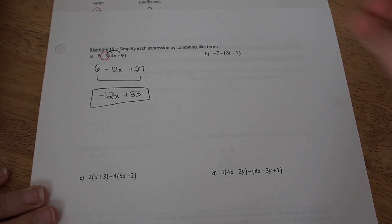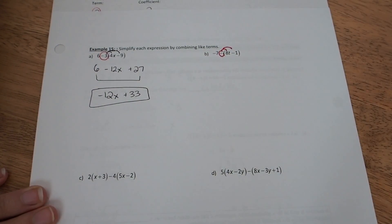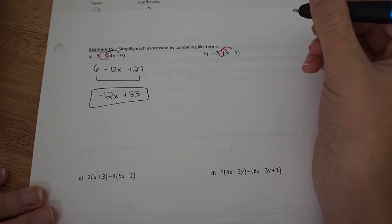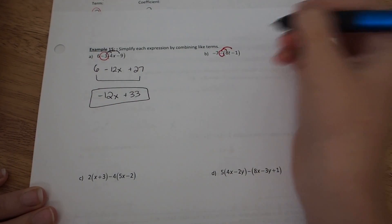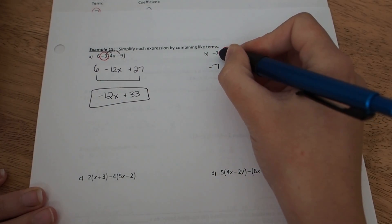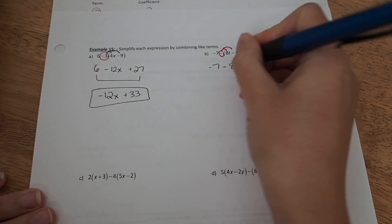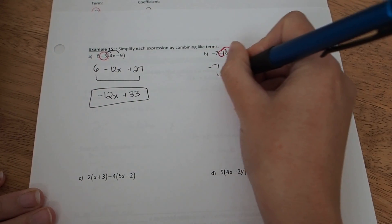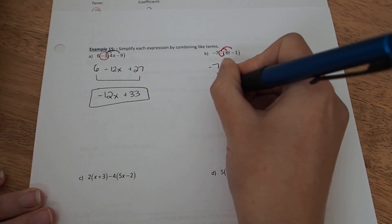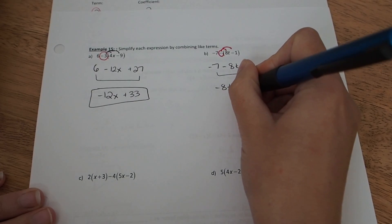Distributes first. We're going to be distributing just a negative. You can imagine it as a negative 1 if you'd like. Or a negative times a positive is a negative and vice versa. A negative times a negative is a positive. So negative 7 keeps that there. Minus times positive gives me minus 8t. And a negative times a negative gives me plus 1. Grab your likes again. That negative 8t is going to move to the front. And a negative 7 plus a 1 is going to be a minus 6.